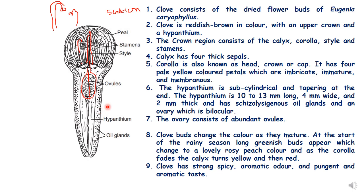The hypanthium has schizolysigenous oil glands and a bilocular ovary. The aroma and flavor of clove is because of the oil glands present in the hypanthium, which contains the oil eugenol. The hypanthium is full of oil glands, and its inner circular portion contains ovules — it has a bilocular ovary with many ovules. The crown has stamens, style, and four petals.